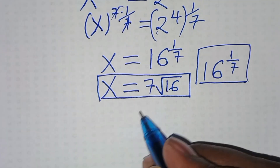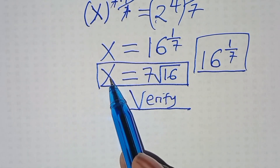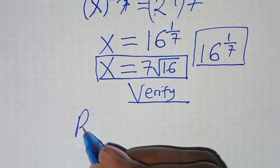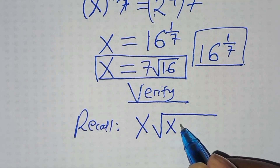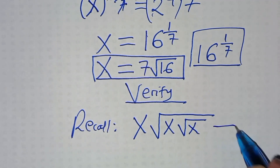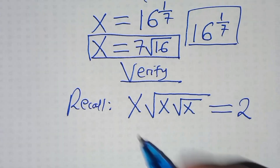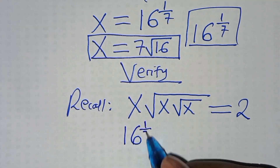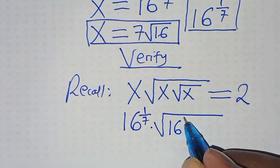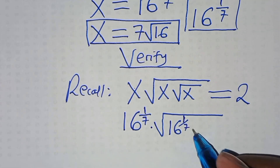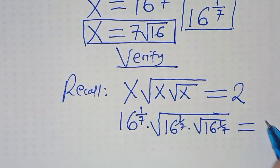The next step here is to verify that this value of x satisfies the equation. Now if we recall, we have x times square root of x times square root of x, and this should give us a value of 2. Now substituting the value of x, we have 16 raised to power 1 over 7, times the square root of 16 raised to power 1 over 7, multiplying by square root of 16 raised to power 1 over 7. This should give us a value of 2.